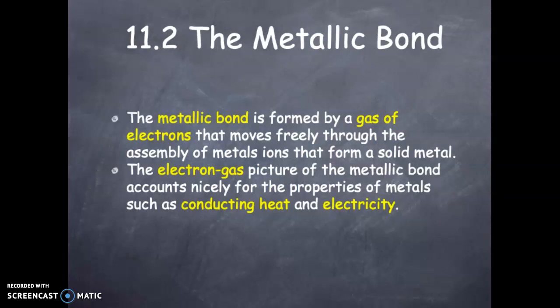Metallic bonding. We've now looked at ionic bonding, covalent bonding. The third we will consider is metallic bonding. Metallic bonding is formed by a gas of electrons. We call it a gas, different than, say, oxygen gas, but it's a sea of electrons that moves freely through the assembly of metal ions that form a solid material.